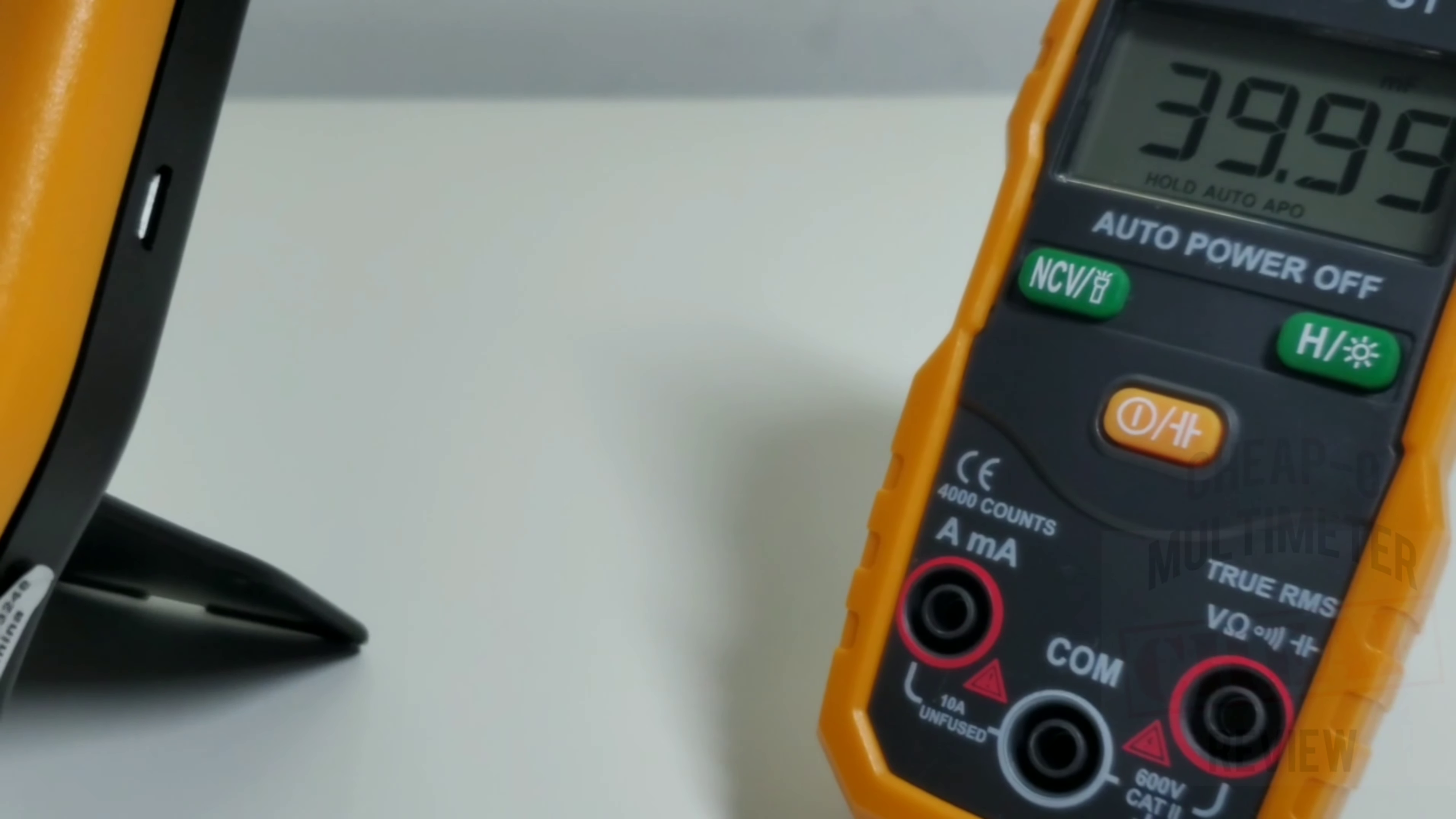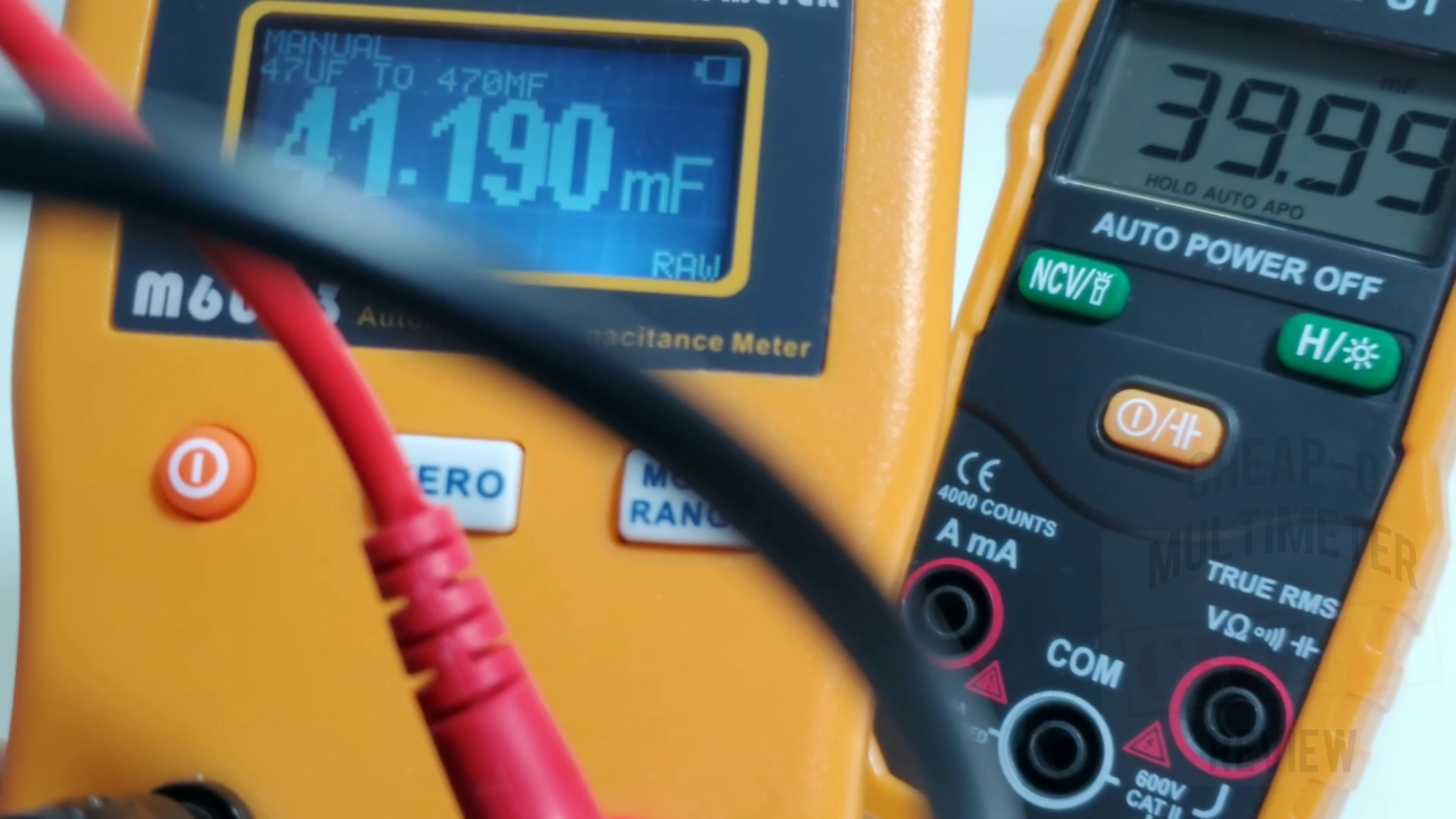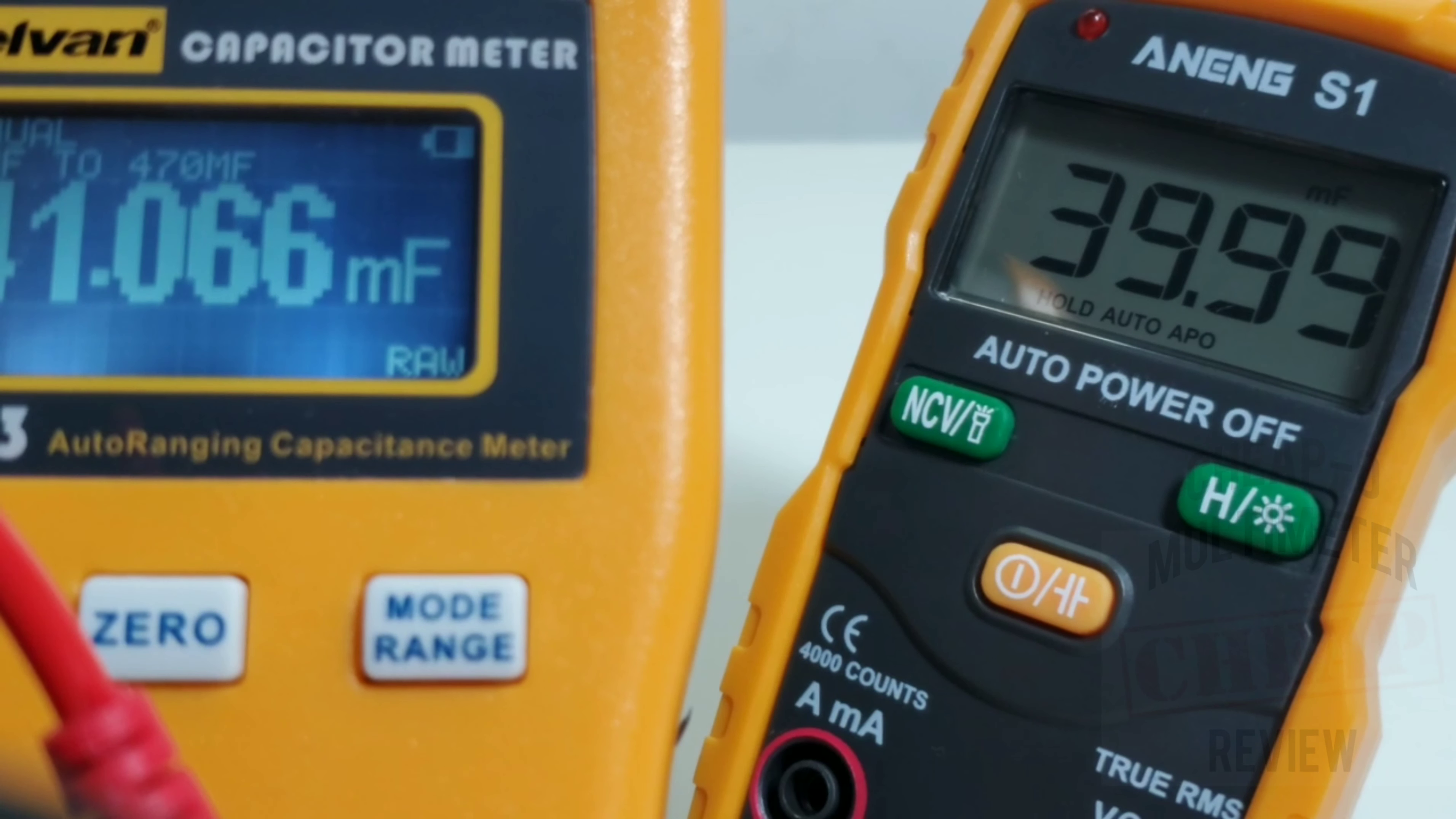All righty, I've got the Excel Van out and it is measuring the same cap. And yeah, look at that, 41.1 millifarad. 40 millifarad for the ANENG S1. Hey, what can you ask for more than that? I think not. That is literally 20 times spec. Wow, that's value. Way to go ANENG!